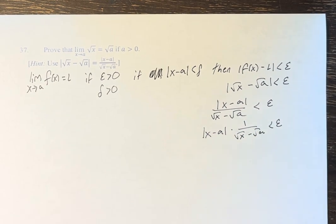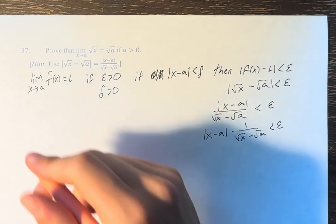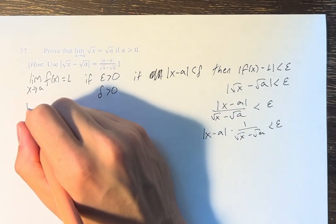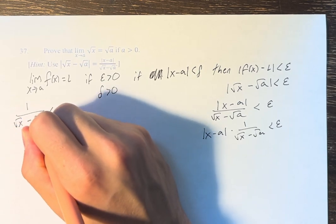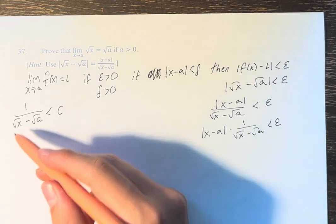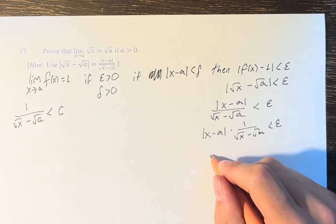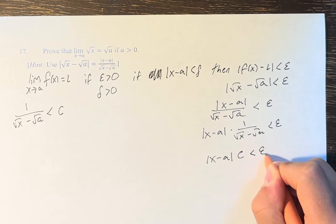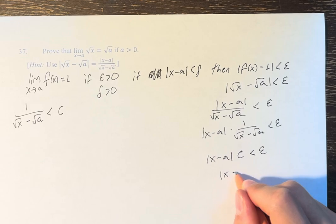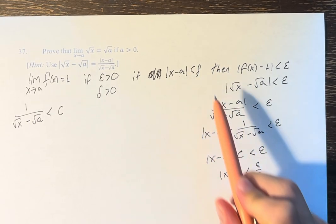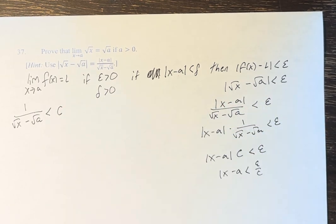We can't just solve for |x - a| directly here, so we introduce a constant c such that c is greater than 1 over (√x + √a). If this holds, then |x - a| times c is less than epsilon, and therefore |x - a| is less than epsilon over c, meaning delta equals epsilon over c. So we need to find a value of c that works.